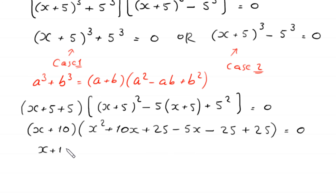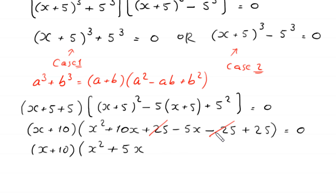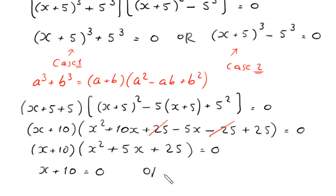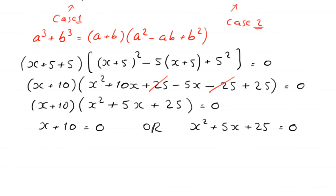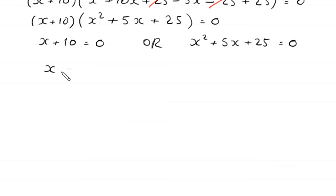Simplifying: 10x minus 5x gives plus 5x, and the 25 terms cancel leaving plus 25. So we get (x plus 10) times (x squared plus 5x plus 25) equals 0. From here, either x plus 10 equals 0, giving x equals negative 10 as the first solution, or x squared plus 5x plus 25 equals 0.